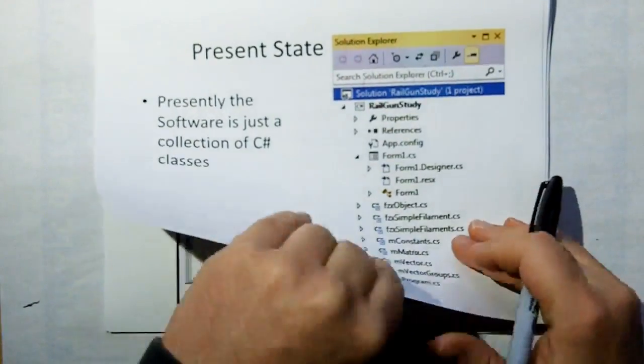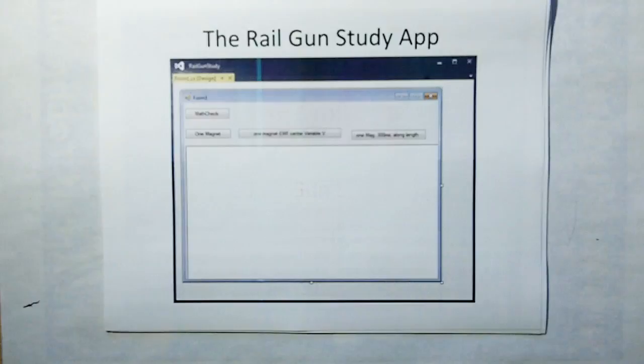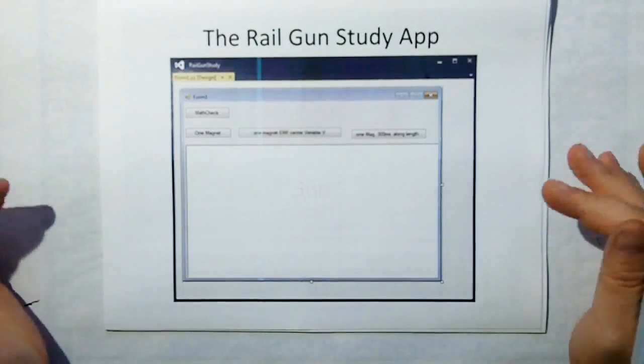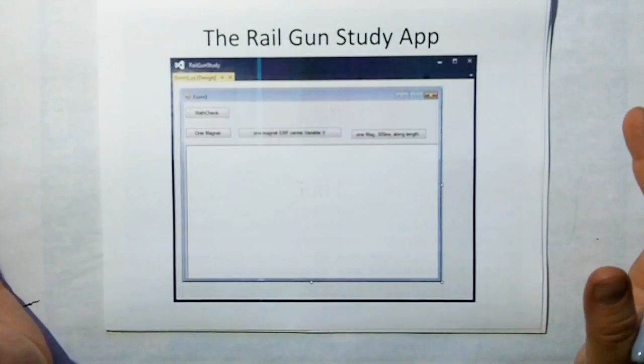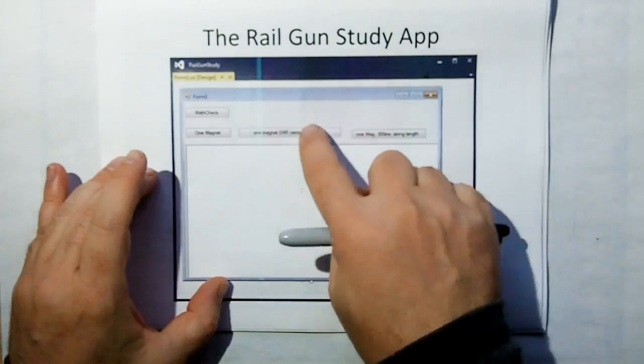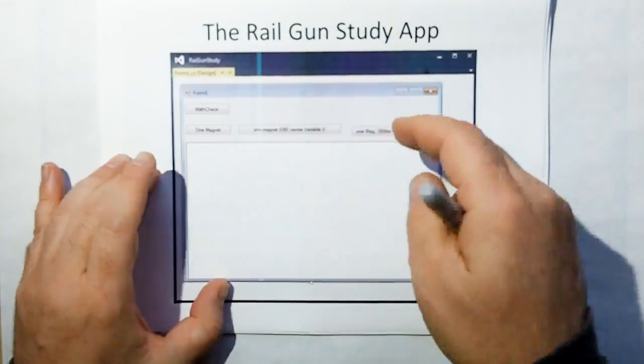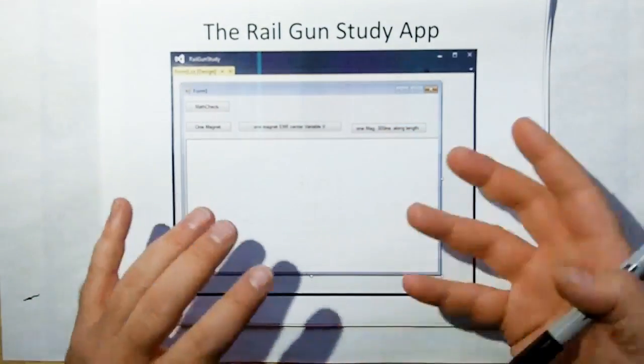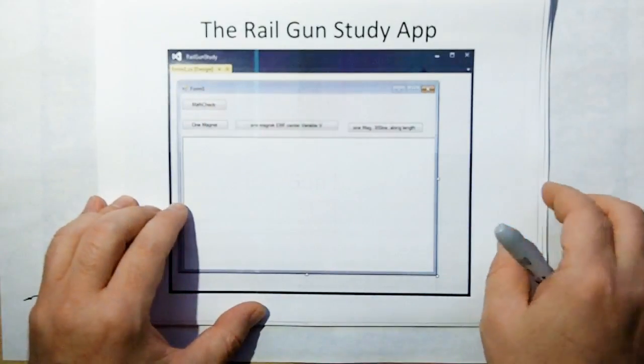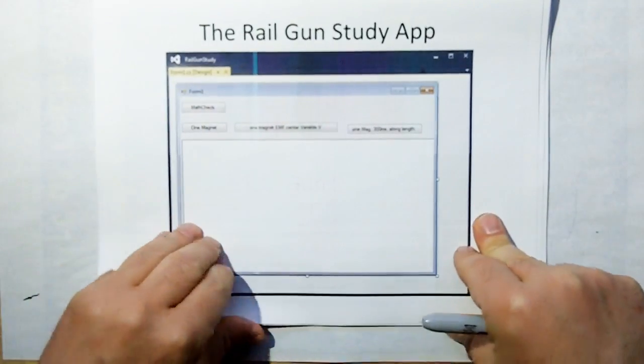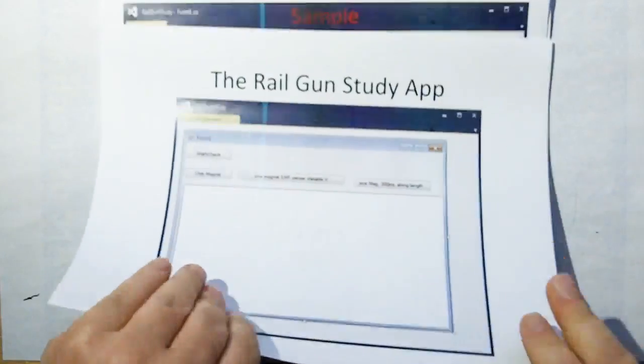So what I've done is pulled these into a simple C-sharp Windows application with buttons where I can click and it'll give me the answers to a few simple problems I'm working on right now. The important one for this video is the math check because we need to verify that this software gives the right answer.